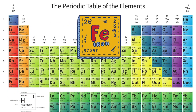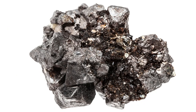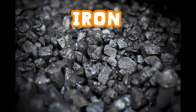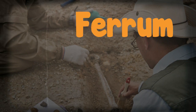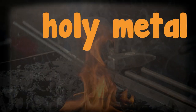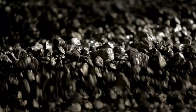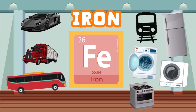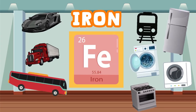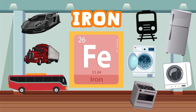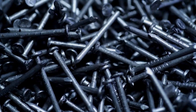Today from the periodic table we are going to learn about the element called iron. This is what iron looks like. Iron is a solid. Iron was discovered thousands of years ago and was originally called 'ferrum' in Latin. Ferrum means 'the holy metal.' Iron is one of the most common metals on earth because it's easy to mine and to craft with. We use iron to make cars, trucks, buses, trains, refrigerators, washing machines, clothes dryers, stoves, dishwashers, and utensils like forks, spoons, knives, and nails.